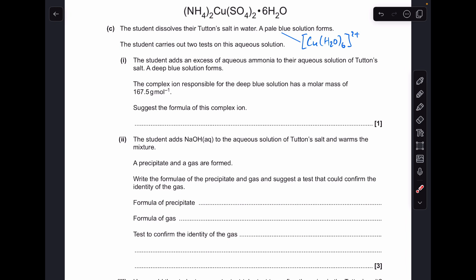Moving on to part C. The students dissolve their tutton salt in water. I've just repeated the formula up there. A pale blue solution forms. That's going to be due to the presence of this copper hexa aqua 2 plus ion.